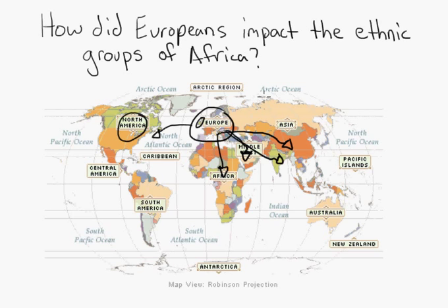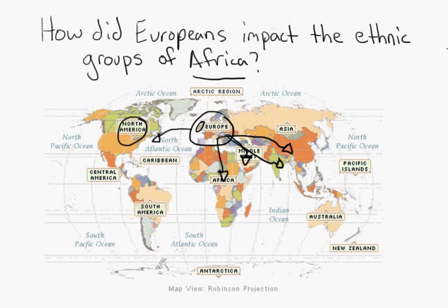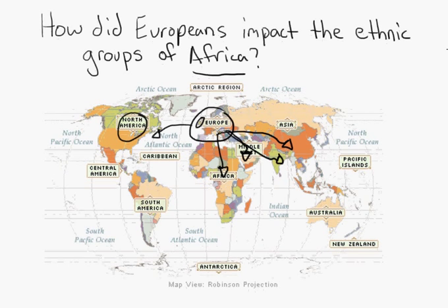Today in this podcast we're going to be looking at Africa — how did the Europeans impact the ethnic groups of Africa? We'll be focusing on a couple of terms and looking at something that many people in Europe and even the United States don't learn in great detail. It's a unit I think is really important because it definitely impacts today. We just talked about Gaddafi, how he was killed, and how many people in Libya are looking to Italy for help — well, because Italy once controlled Libya. There are so many ways it impacts us today.